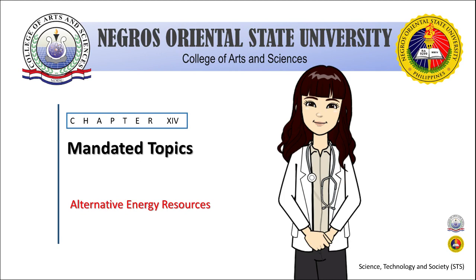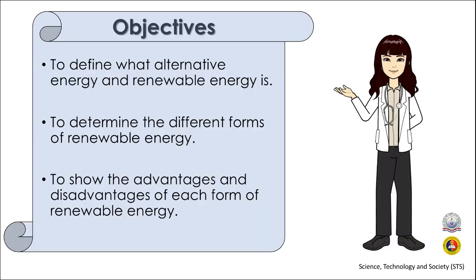Let us begin by knowing our learning objectives for this lesson. First, is to determine what alternative energy and renewable energy is. Next, is to determine the different forms of renewable energy. And lastly, is to show the advantages and disadvantages of each form of renewable energy.